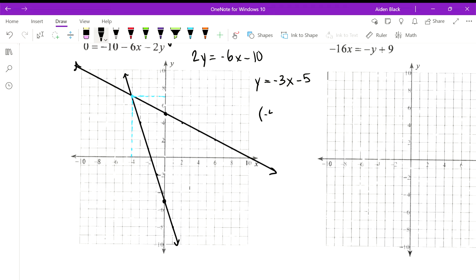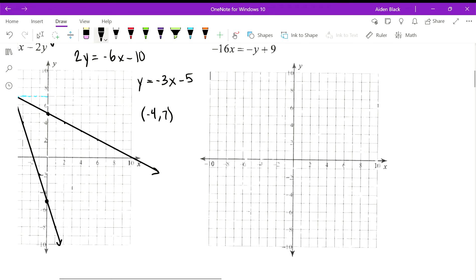Here's our intersection, and it looks like we are at negative 4 comma 7. So our solution is negative 4 comma 7.